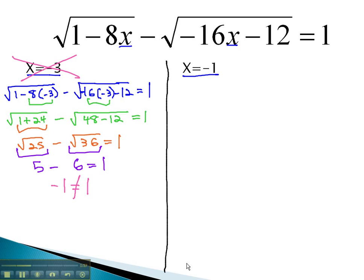Let's check the other answer to see if it works, or if it doesn't work either, and there would be no solution. Plugging it in to the original equation, we would have the square root of 1, minus 8x, which is negative 1, minus the square root of negative 16x, which is negative 1, minus 12. Hopefully, this will equal 1.